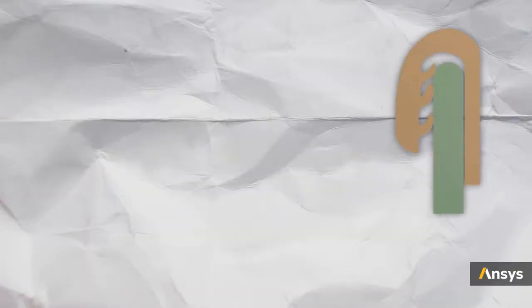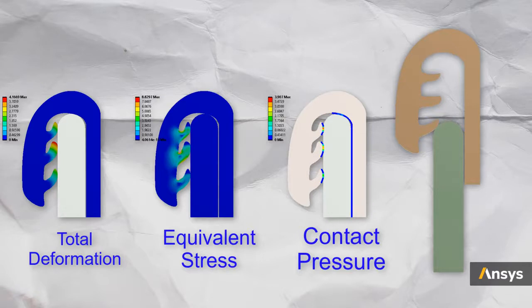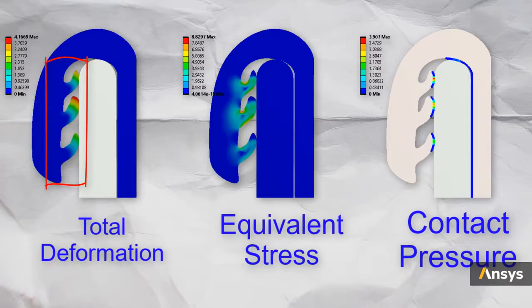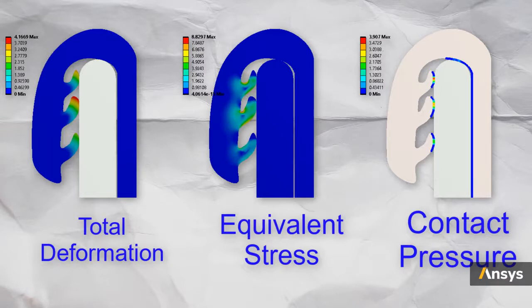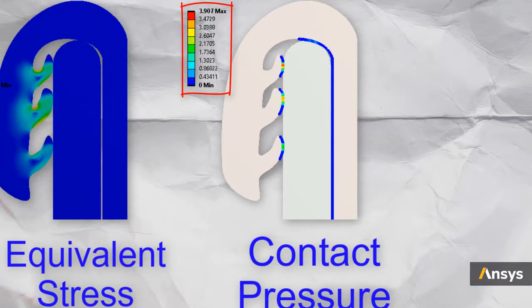Here are the results from the simulation. We are looking at the contour plots for total deformation, equivalent stress, and the contact pressure generated at the rubber-glass interface. We can see that the material is undergoing very large deformation and we can see where the material experiences maximum stresses. Most importantly, we can see how much contact pressure is generated at the interface, which indicates how much pressure the seal can withstand. In this case, it's 3.9 MPa.